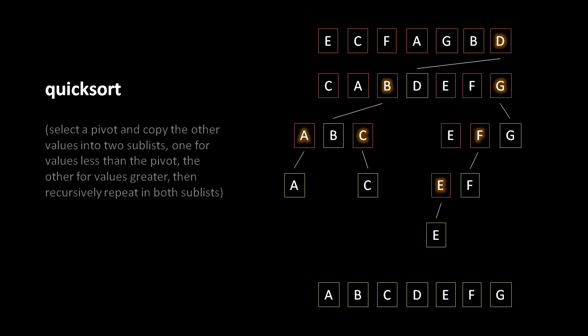The sorted list gets constructed by taking the recursive calls on the left and right sublists — the sorted sublists they return get concatenated with the pivot in the middle. For example, in the case of pivot B, its sublists are A and C, which are both single element lists — the recursive base case — so they get returned as is, and those two sublists are concatenated with B in the middle. Then in the case of pivot D, its recursive call on the sublist CAB returns the sorted list A, B, C. And D's right sublist EFG should also come back sorted, so we concatenate those together with D in the middle.